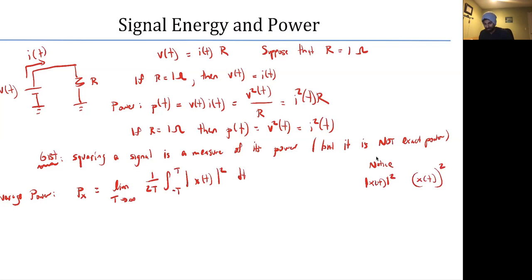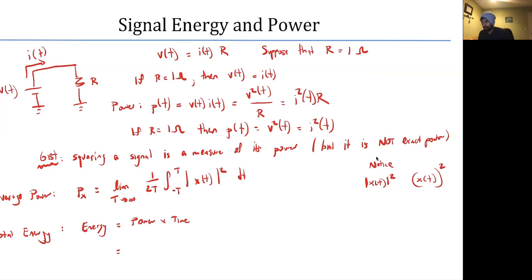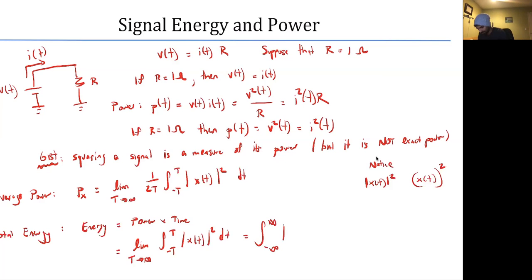This is average power. Remember that power could have units like joules per second. The total energy of a signal is related by energy equals power multiplied by time. So in this particular example, we're going to take the integral expression with a limit as T approaches infinity to get energy.